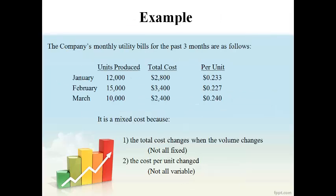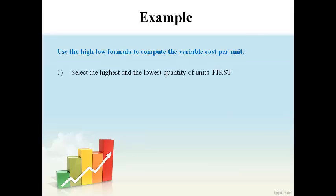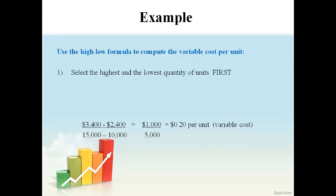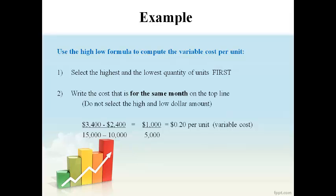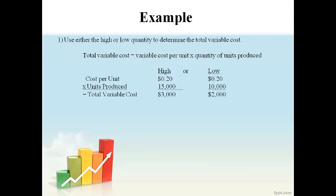Here's an example of utilities that is a mixed cost. The total cost does not stay the same and the cost per unit changes as the volume changes — this is how you know it's a mixed cost. The high-low formula will be used to compute the variable cost per unit. The high and low quantity is selected first and is placed below the line. The dollars associated with the quantity in the same month is placed on top of the line. It is very important that you do not just select the highest and lowest dollar amounts. The high and low quantity and the amounts must be for the same months. The variable cost per unit is computed by the formula and used to compute the total variable cost. The cost per unit can be multiplied by either the high quantity or the low quantity — you do not have to do both. This example shows both so you can see that the fixed cost is the same when using the high or the low quantity.